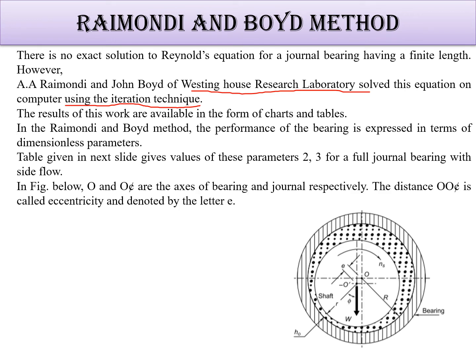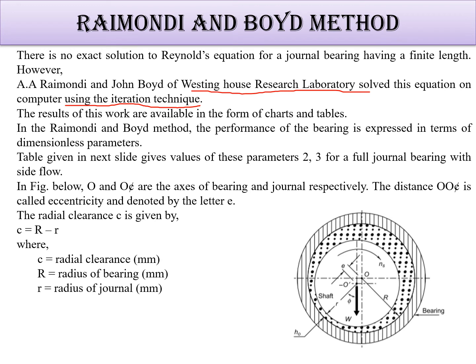As I told, O and Oc is nothing but the axis of bearing and journal. Distance between these two is the eccentricity, determined by letter e. The radial clearance is capital R minus small r, where c is the radial clearance, capital R is radius of bearing, small r is the radius of journal. So the eccentricity is defined as the ratio of e upon c.